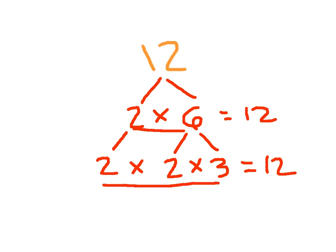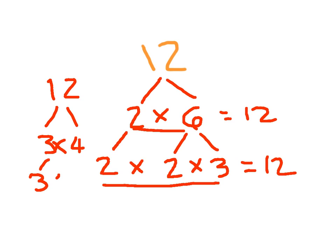That was one possible factor tree for 12. There are other ones possible depending on how you chose to break down 12. For instance, we could have done 12 with 3 times 4. If you notice, these numbers at the bottom, even though they are not in the same order, are the same numbers. We've got two 2s and one 3 in both trees.